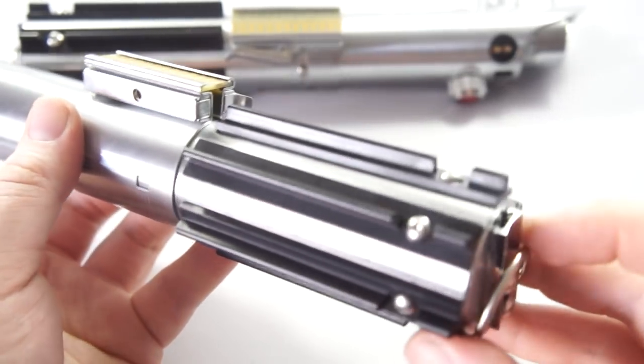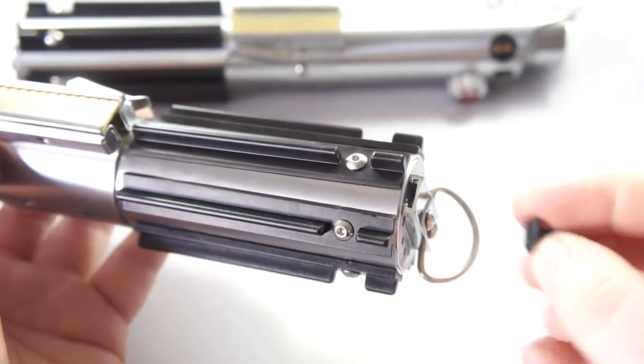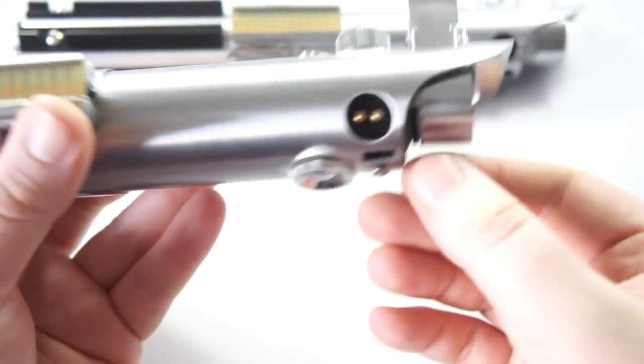Should you want to just access the kill key, you can also unscrew the bottom half and put the kill key in. It saves having to take the whole saber apart.